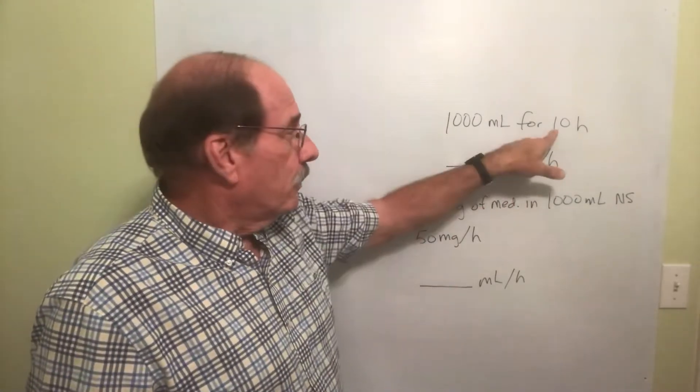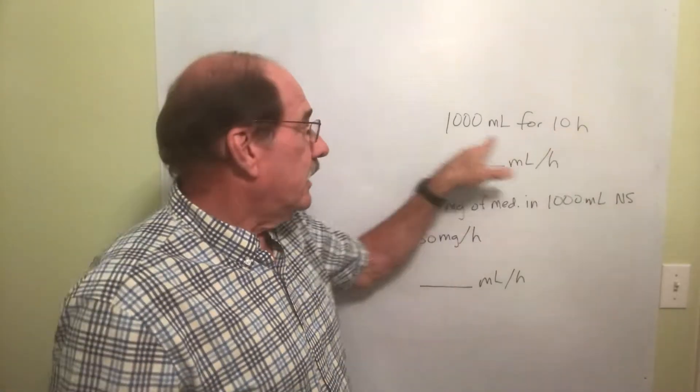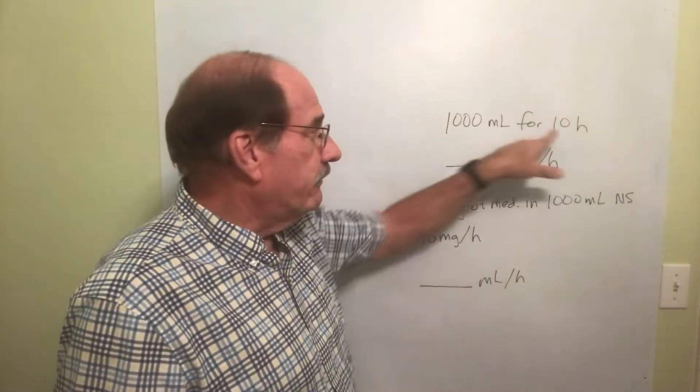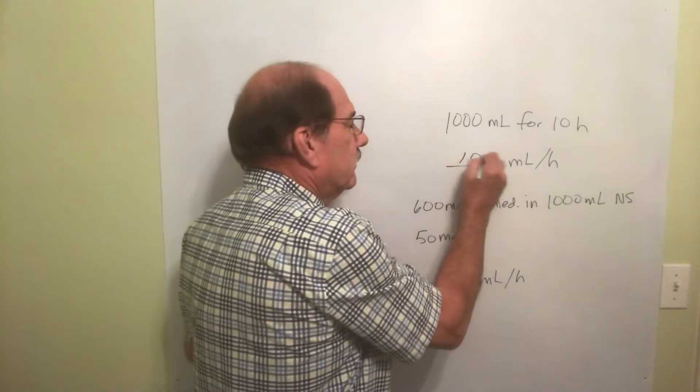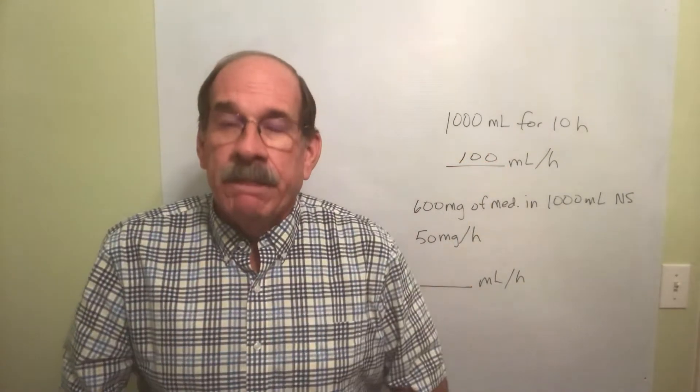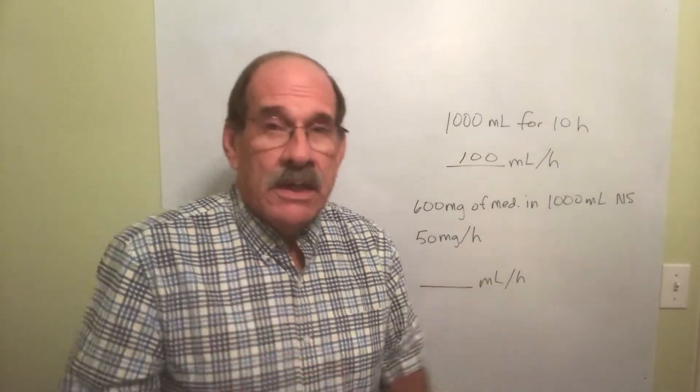For every machine you have to know how many milliliters per hour. Well, that's simple. We have 1000 milliliters we're doing for 10 hours. You take 1000, that's the milliliters, divided by 10, that's the hours. The answer is 100.